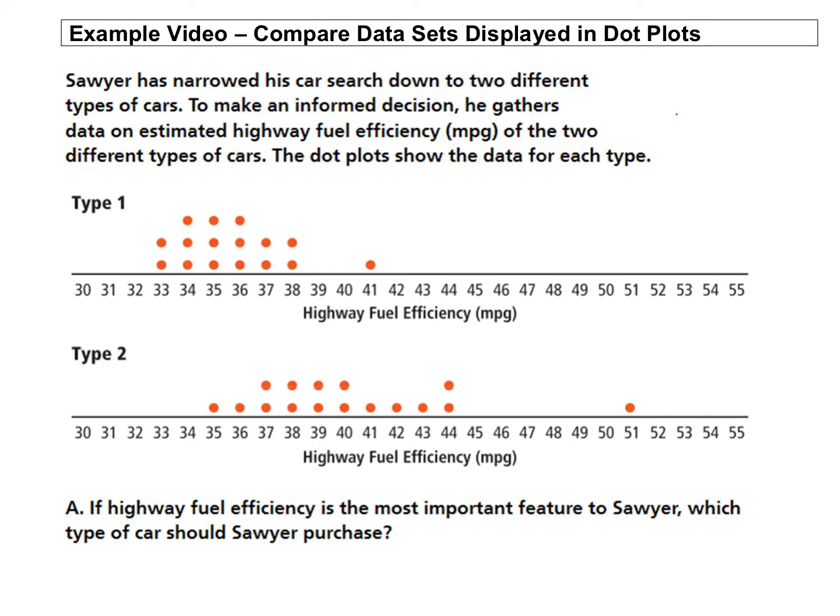34, 35, 36, a little bit higher, a bit of an outlier here at 41. So this car at 41 gets more miles per gallon than these cars down here.